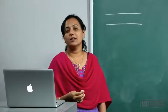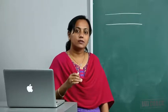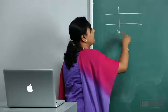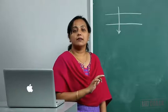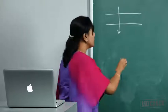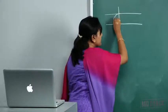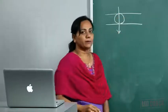Active transport requires energy, which comes from hydrolysis of ATP. Nearly 40% of energy within the cell is used for transport across the membrane. This is mostly unidirectional — the body doesn't want to unnecessarily use energy to transport in both directions. These are very specific, unidirectional, carrier-mediated transport mechanisms. There are two types: primary active transporters and secondary active transporters.